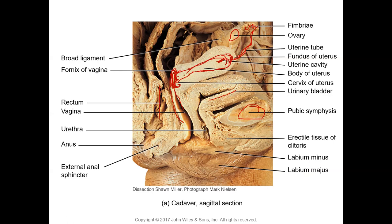Posteriorly is the rectum; this is the urethra. Coming to the external genitalia: there is a pad of fat over the pubic symphysis known as the mons pubis. The external fold of skin is the labia majora; medially are the labia minora. There is erectile tissue known as the clitoris. Going below the rectum is the anus and the external anal sphincter.